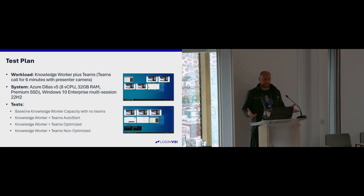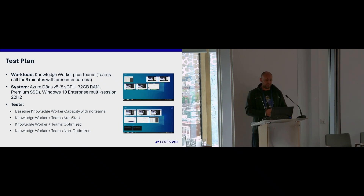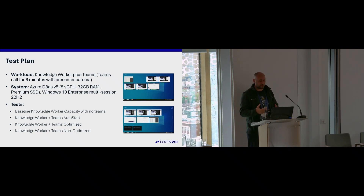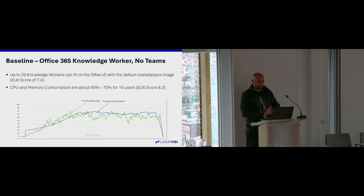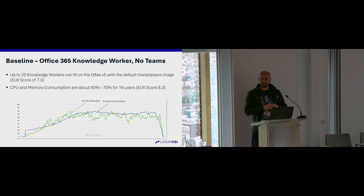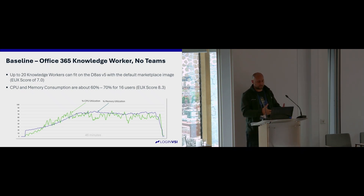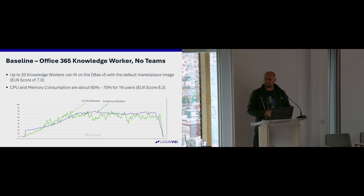We did four different tests: first, just the knowledge worker without Teams to get a baseline density for the VM. Then Teams with auto-start — not joining a conference call, just starting up — to judge CPU and memory consumption at boot. Then Teams optimized with offloading, and Teams not optimized, to understand all the variations in performance. The baseline result: we can fit 20 users on a D8aSv5 with the default marketplace image and no optimization, with a good EUX score of 7. CPU and memory consumption look healthy and we don't max everything out.